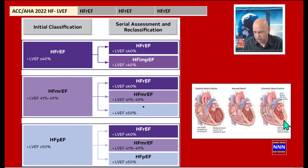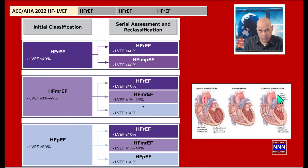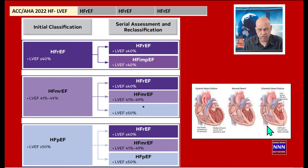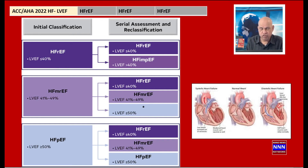The third group is heart failure with preserved ejection fraction — HFpEF. This is the hypertensive hypertrophic cardiomyopathy type of group, with left ventricular hypertrophy, diastolic dysfunction, and elevated end-diastolic pressure — which can precipitate acute pulmonary edema and resolves quickly with diuretics. HFpEF has a normal ejection fraction — assuming 50 percent is normal — but still exhibits diastolic dysfunction, whereas HFrEF is related to systolic dysfunction of a dilated, flappy left ventricle with increased diastolic volume and proportionately reduced stroke volume.